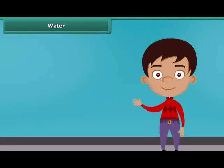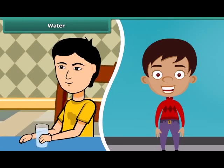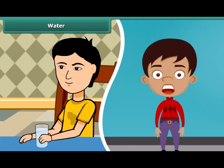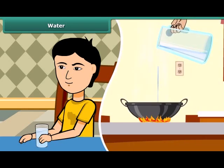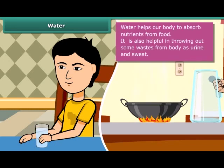Now let us know about water, which is also an important constituent of our food. A body gets most of its water in the form of liquid. In addition, we also add water while cooking food. Water helps our body to absorb nutrients from food. It is also helpful in throwing out some wastes from the body as urine and sweat.